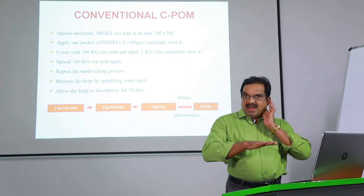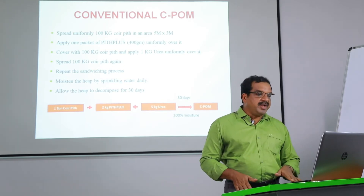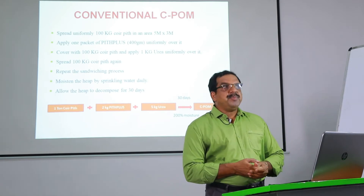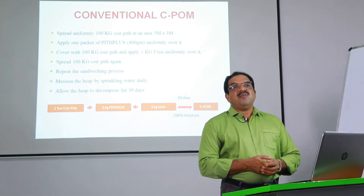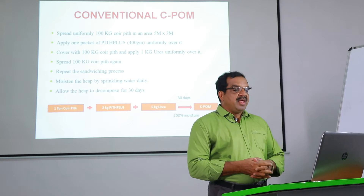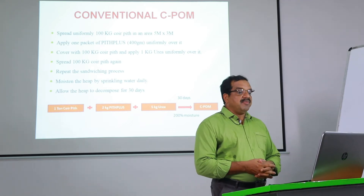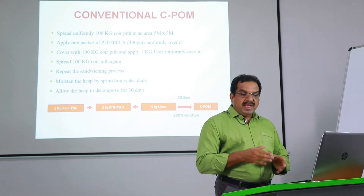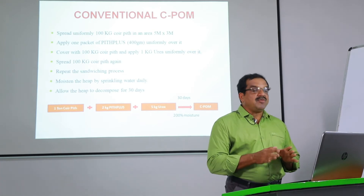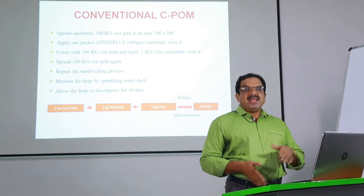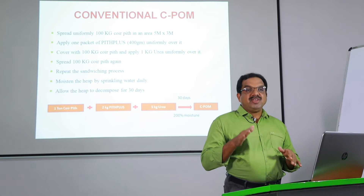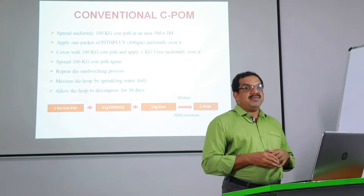The first layer is 100 kg of coir pith, over which you spread one packet of Pith Plus. One packet of Pith Plus is 400 grams, and that can be applied over 100 kg of coir pith. Then for the next 100 kg layer, 1 kg of urea is applied.